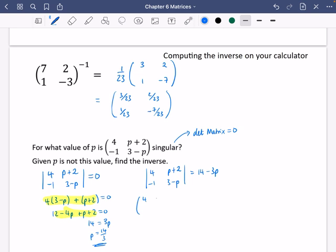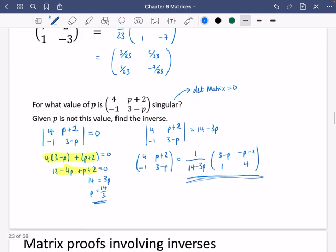So if I'm going to write down the inverse of this matrix, I can do so. It's just going to look pretty unpleasant. It's just going to be 1/(14 - 3P) times the matrix with swapped and negated elements. So it's going to be (3-P, -P-2; 1, 4) over (14 - 3P). So although it doesn't look very pleasant, that is the inverse of that 2 by 2 matrix that we've got there.